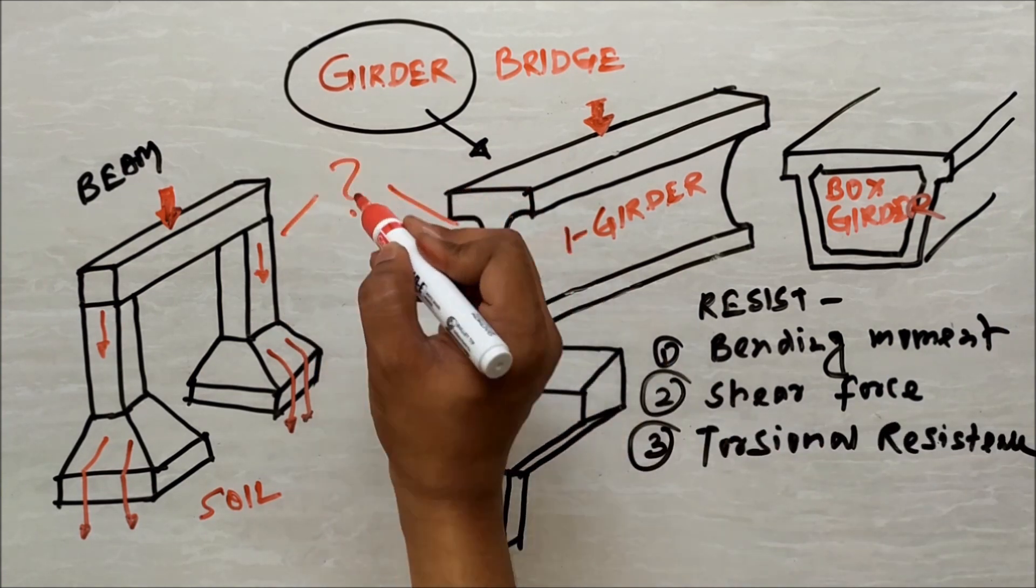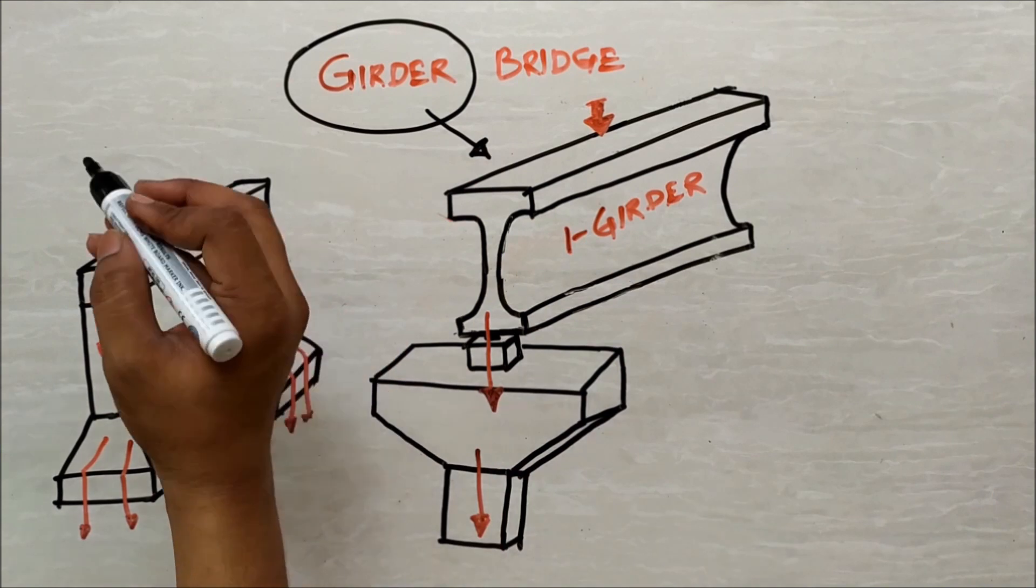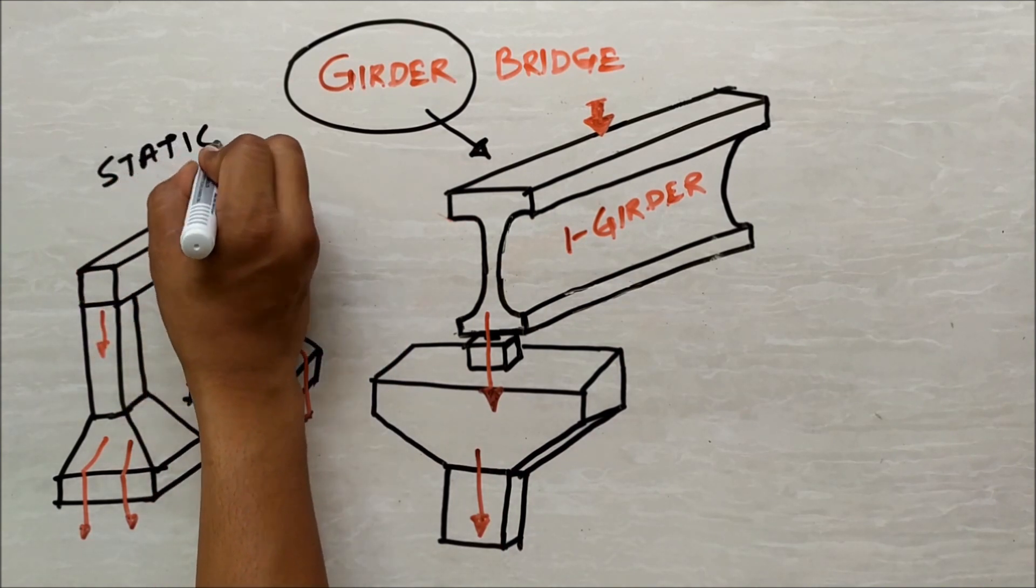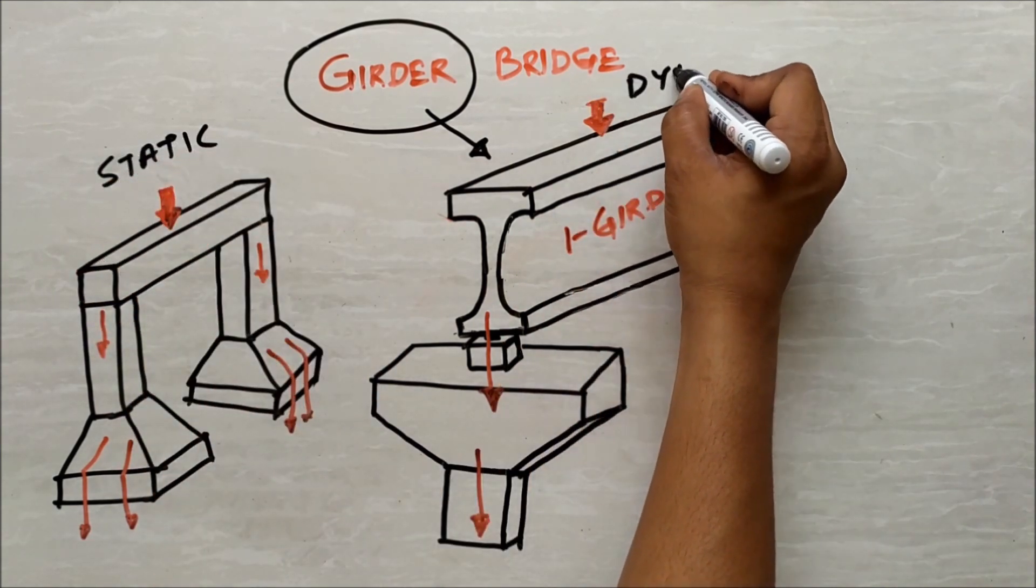What is the fact which differentiates beam to girder? The interesting point is, beam is designed to carry static load and girder is designed to carry dynamic load.